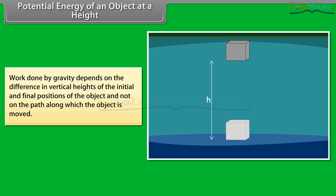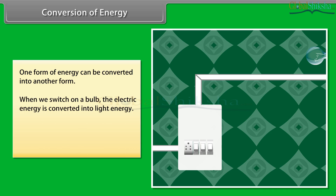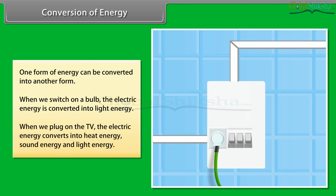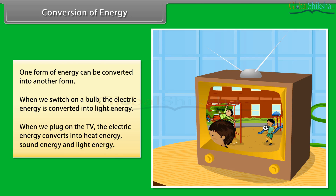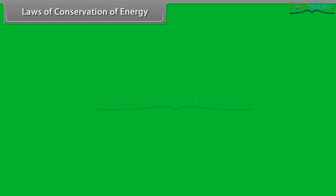Also, the work done by gravity depends on the difference in vertical heights of the initial and final positions of the object, and not on the path along which the object is moved. Conversion of energy: can we convert energy from one form to another? Yes, one form of energy can be converted into another. For example, when we switch on a bulb, electrical energy is converted into light energy. Similarly, when we turn on the TV, electrical energy converts into heat energy, sound energy and light energy.